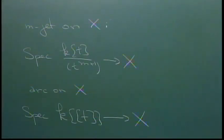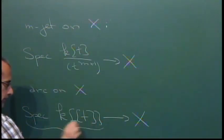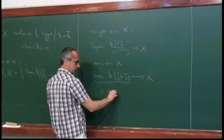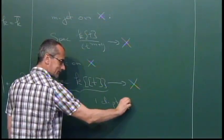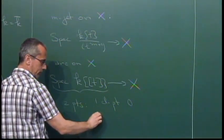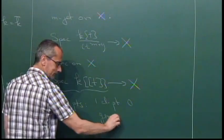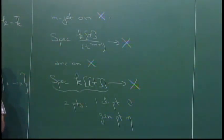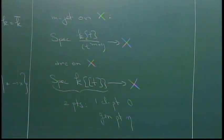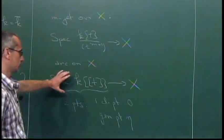The object on the left has two points: one is the closed point, which I usually write 0, and one is the generic point. We all think of these gadgets as really some sort of formal version of an analytic arc on the variety. But from the algebraic point of view, this really has just two points.